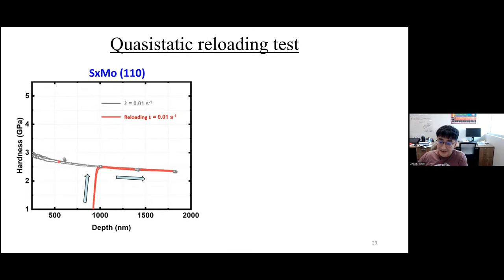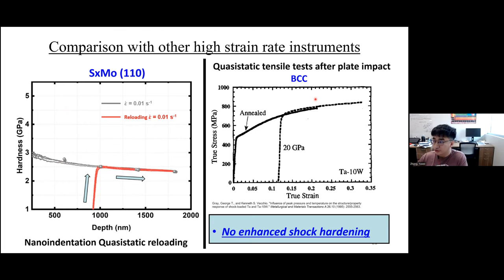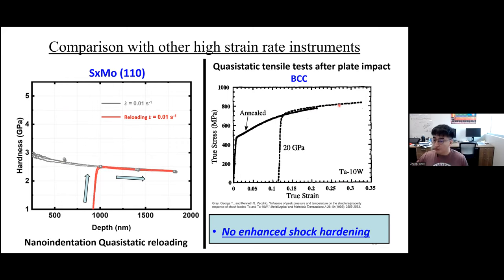In molybdenum, the quasi-static reloading curve matches perfectly with the pure quasi-static test, reflecting no impact-induced damage — consistent with our TEM observations. As comparison, pure quasi-static tensile tests on BCC tantalum alloy before and after plate impact almost overlap each other, reflecting no enhanced shock hardening. Once again, our results match with traditional high strain rate results.